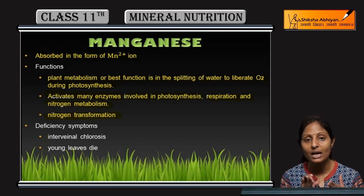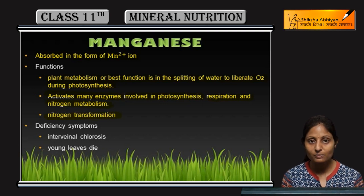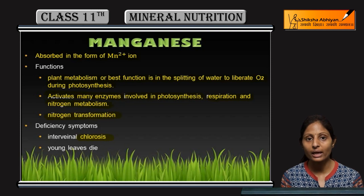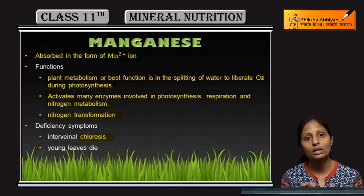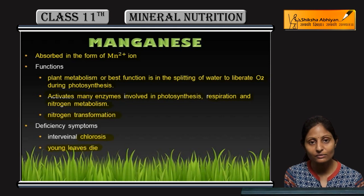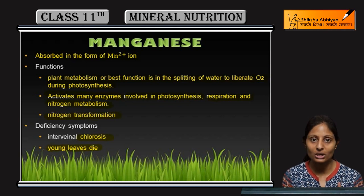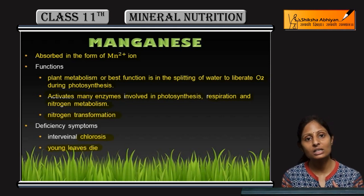Nitrogen ki transformation mein — nitrogen jo atmospheric N₂ hai usko utilizing form mein convert kerne ke liye — uske transformation mein bhi Mn²⁺ ki requirement hoti hai. Jo deficiency symptoms hain, the main is chlorosis: leaf ka jo vein system hai, wo yellow color ki ho jati hai, aur jo young leaves hain, wo bahut hi pehle die ho jati hain.